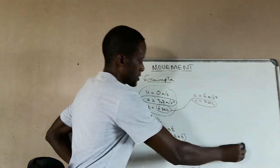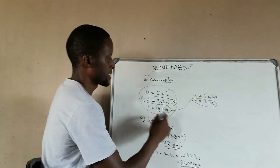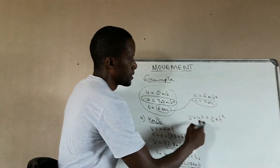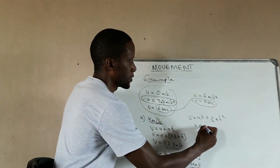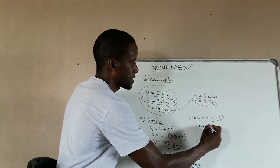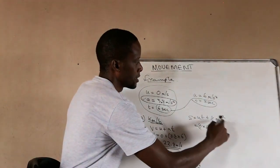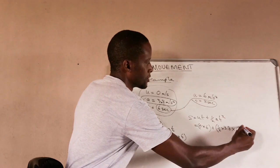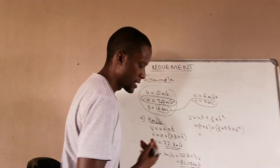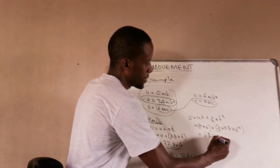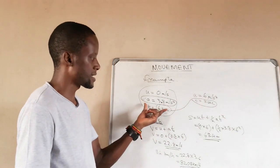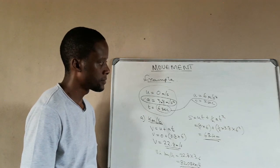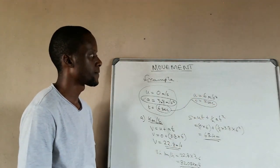Let's calculate the displacement for the first six seconds. Using s equals ut plus half at squared: initial velocity is zero, multiplied by six seconds, plus half times 3.8 times six squared. The zero term vanishes, giving us 68.4 meters. So in the first six seconds, the aircraft covered 68.4 meters.